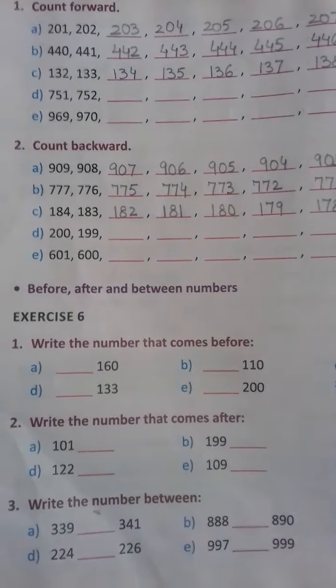Before 907 what comes? 906. Before that, 905, then 904, 903. So we have written these numbers in the reverse order. Part B: 777.